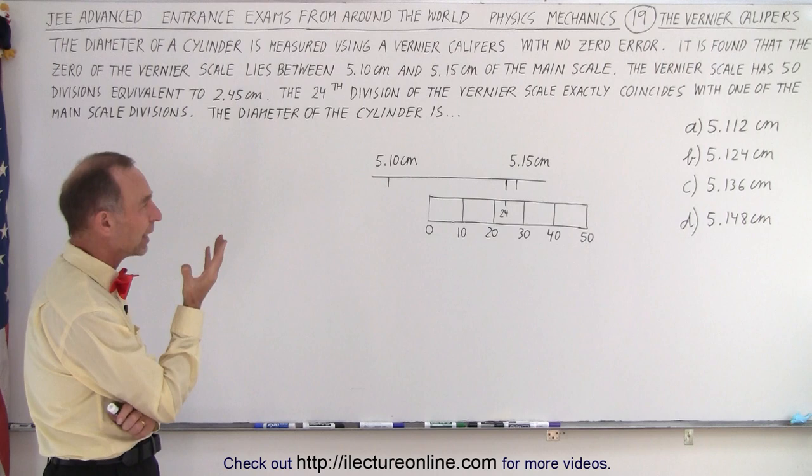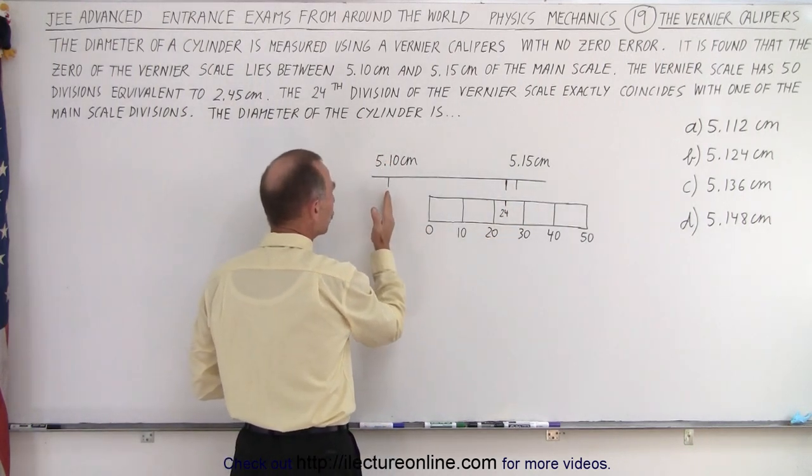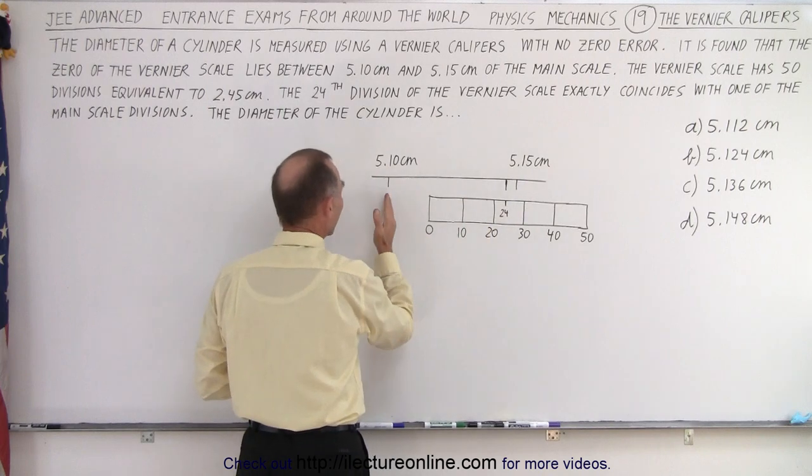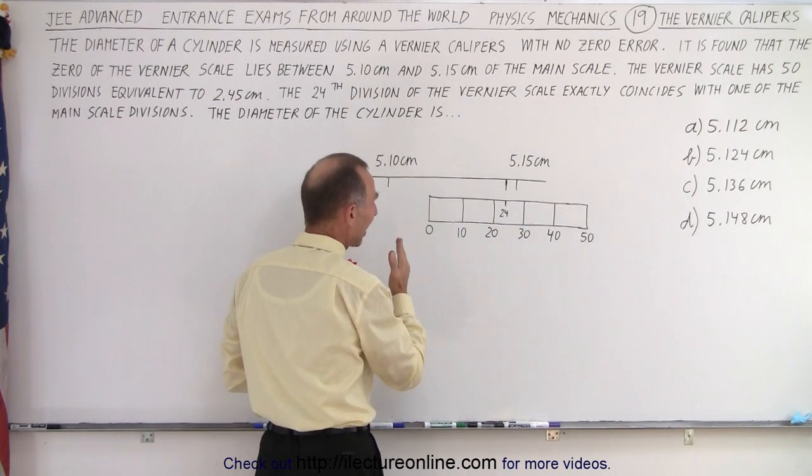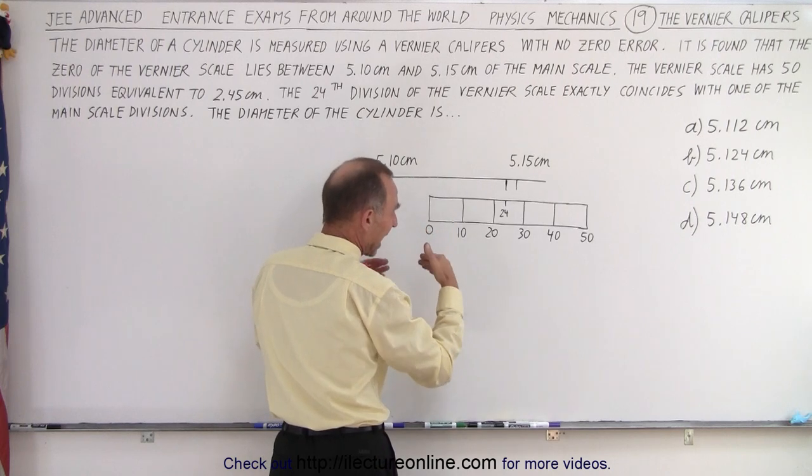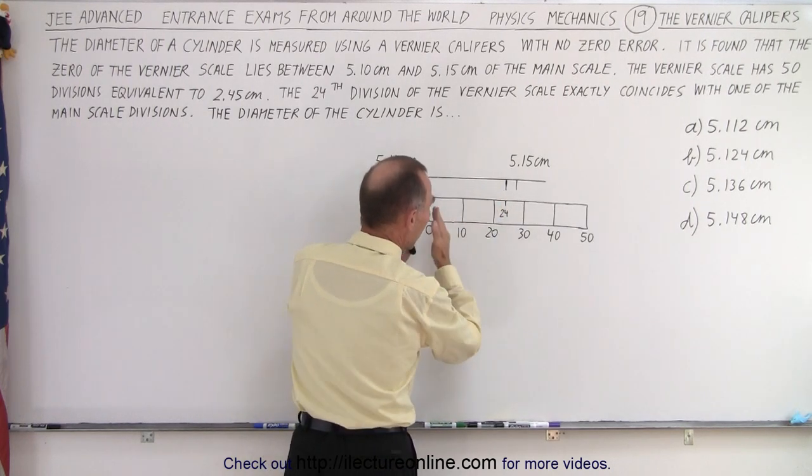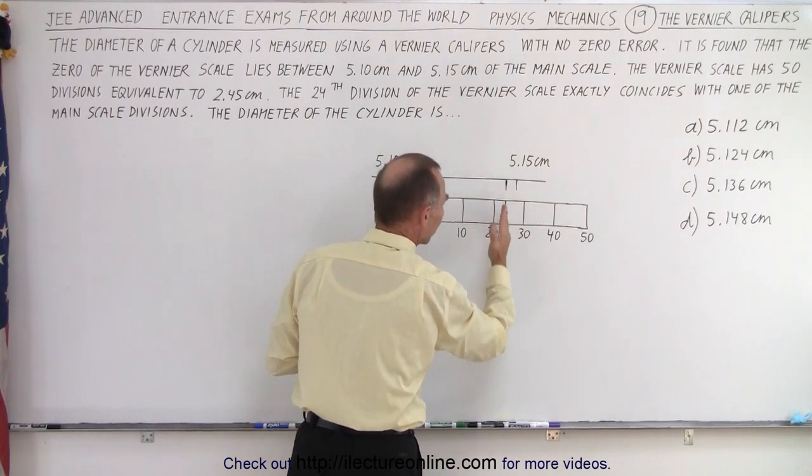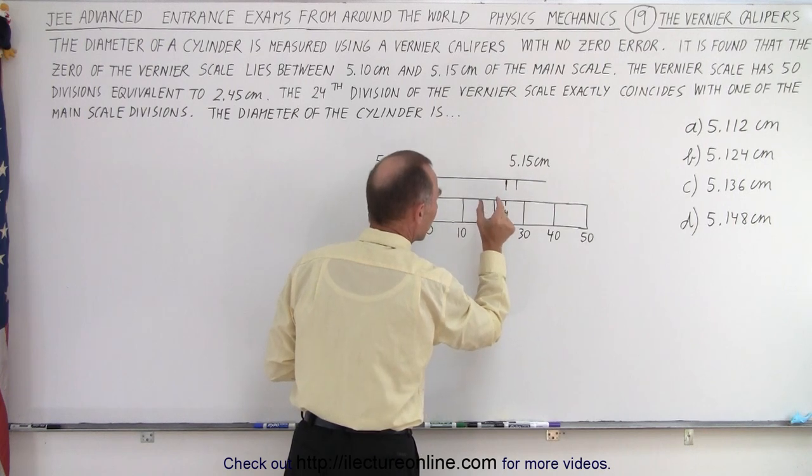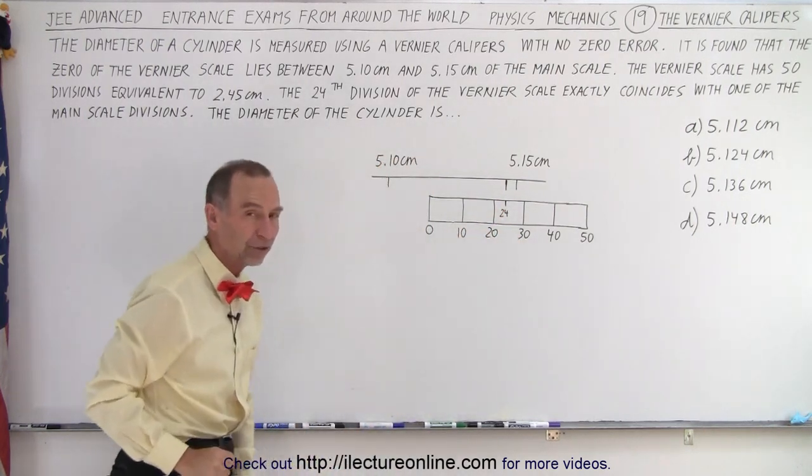So how do we deal with that? First of all, I already drew a little scale here. Notice that the true answer lies somewhere between 5.10 and 5.15 centimeters. Then to find the next portion of the accuracy, we find the 24th division out of 50 on the vernier scale to determine when it coincides exactly with the line there. We add a certain delta to the initial reading of 5.10 centimeters.